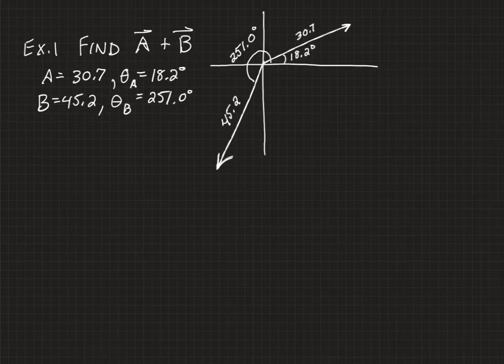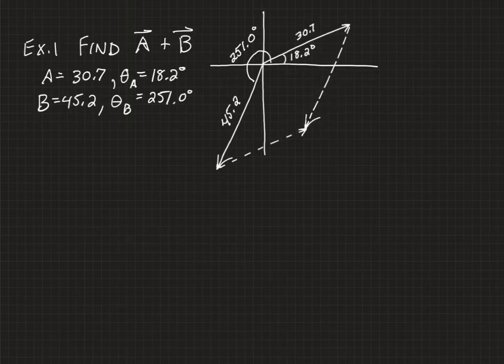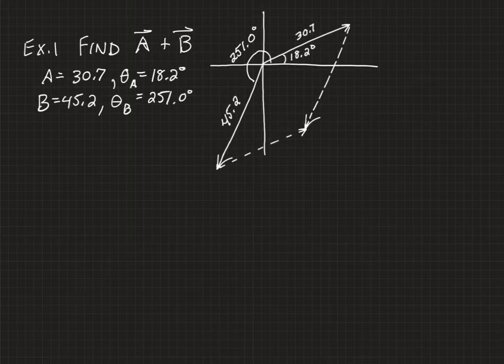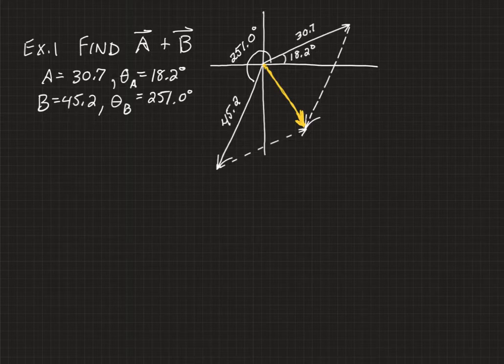So here's the setup, and if we form our parallelogram with these vectors, the opposite sides of the parallelogram. Our resultant vector should then be here. Notice I'm slowly weaning you away from the colors, so that you can do these problems without the colors.